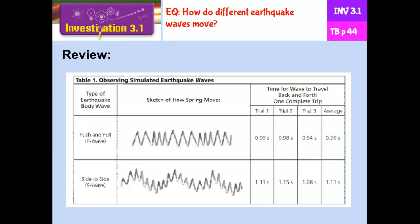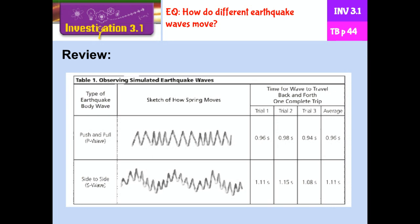Looking back at Investigation 3.1, you were investigating P and S waves. P waves are push and pull waves, and S waves are side to side waves. You should have noticed that the P waves move faster than the S waves, and you also should have recorded what they looked like when those waves went through the springs.